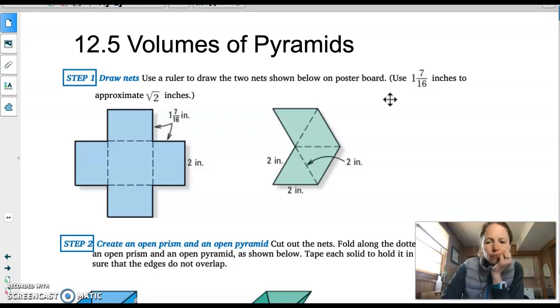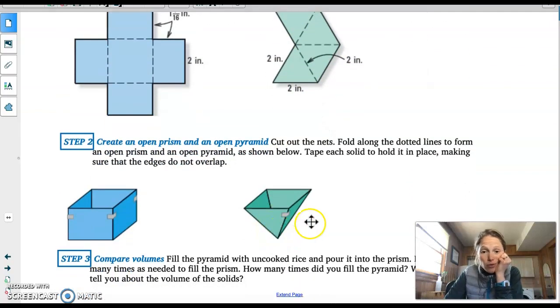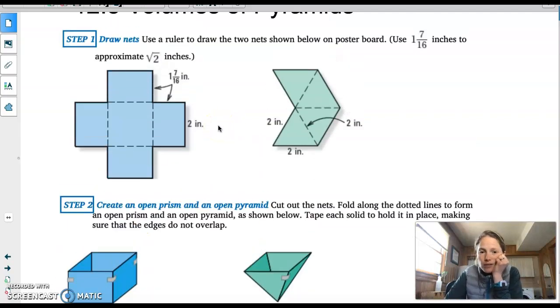So this is just a little explanation about where that came from. So I drew these two nets out and I created a prism and a pyramid that had the same height and the same base. They both had a square base that was two by two and they were both about one and seven sixteenths of an inch tall.